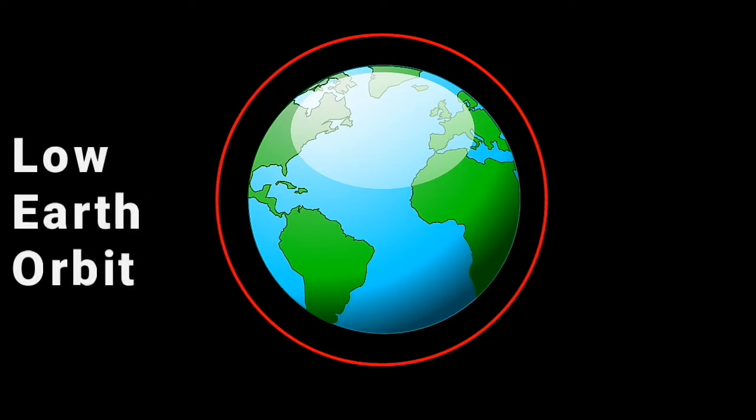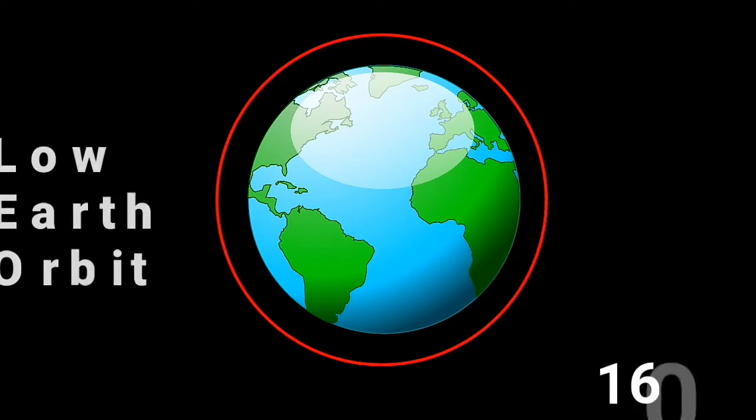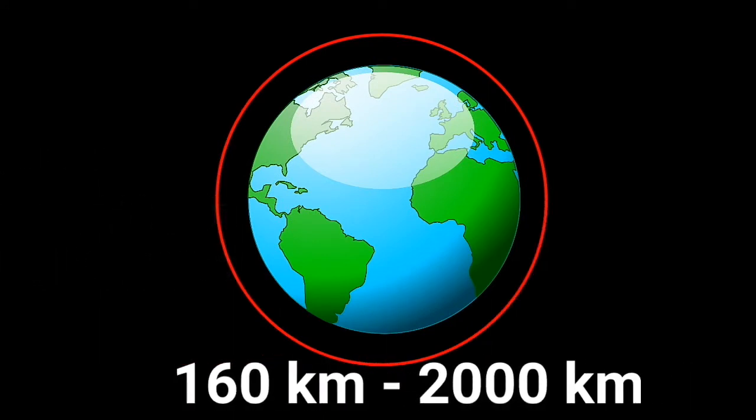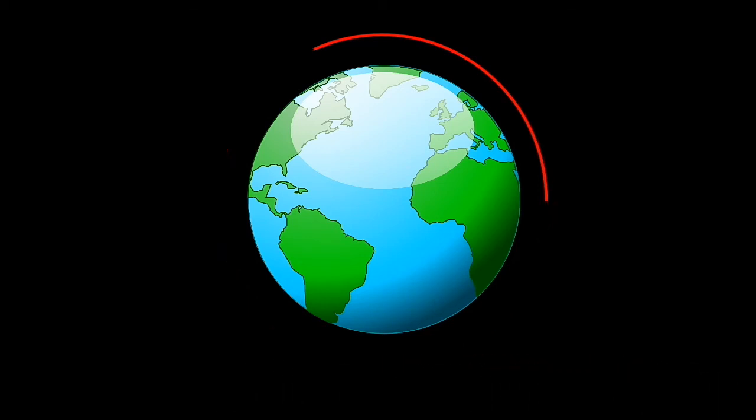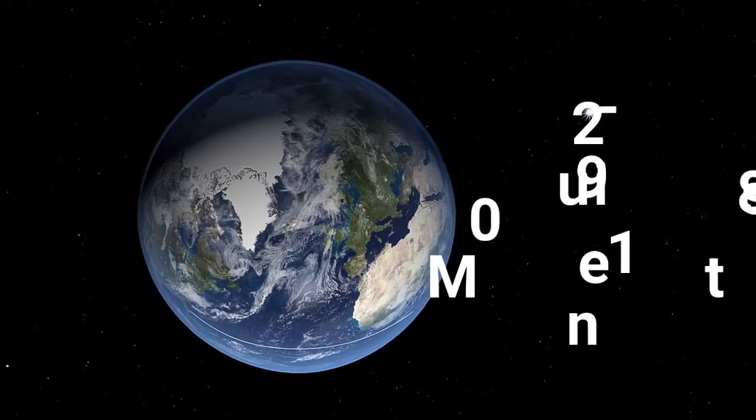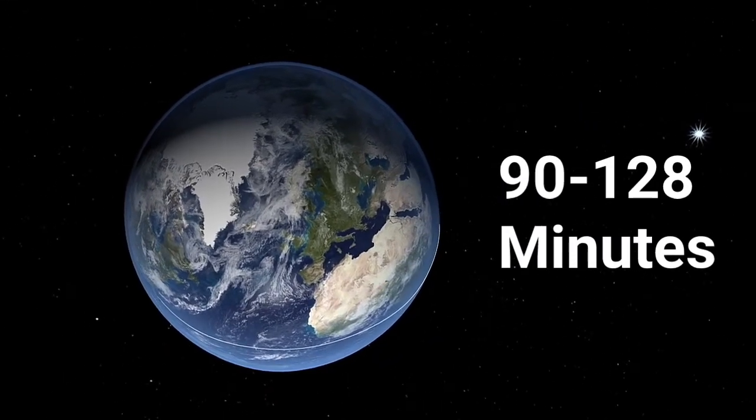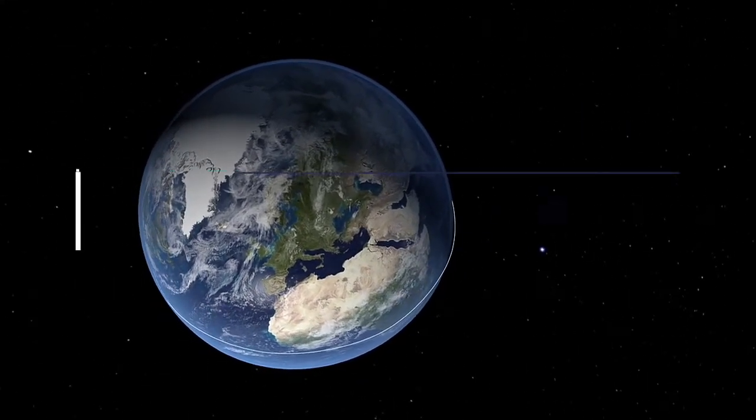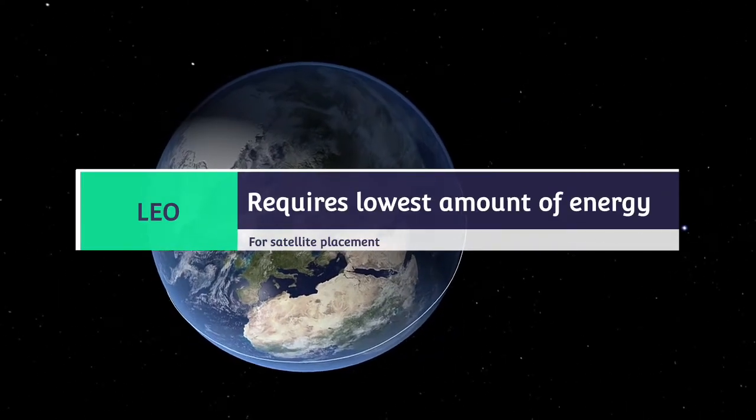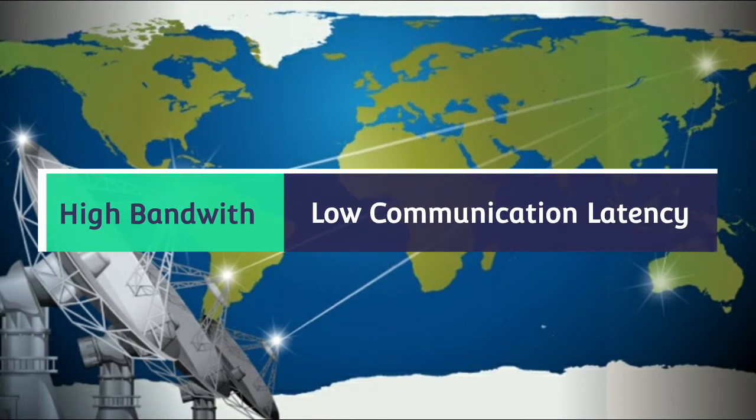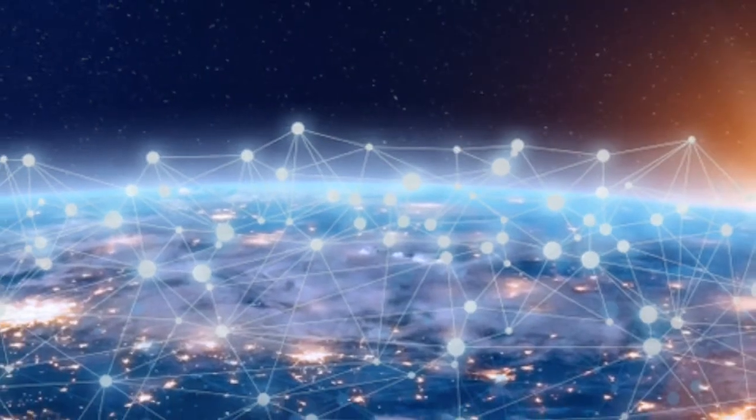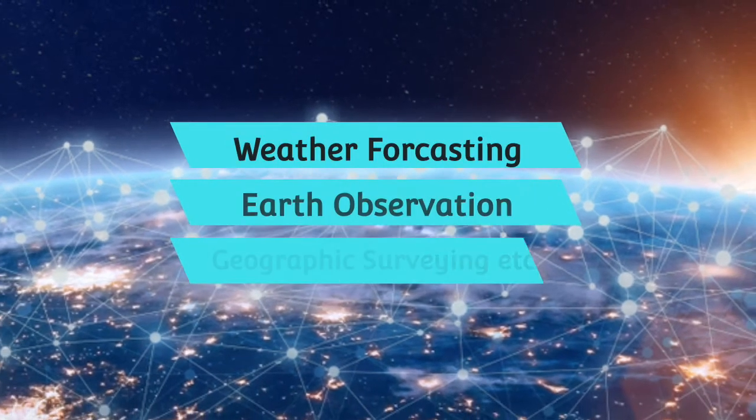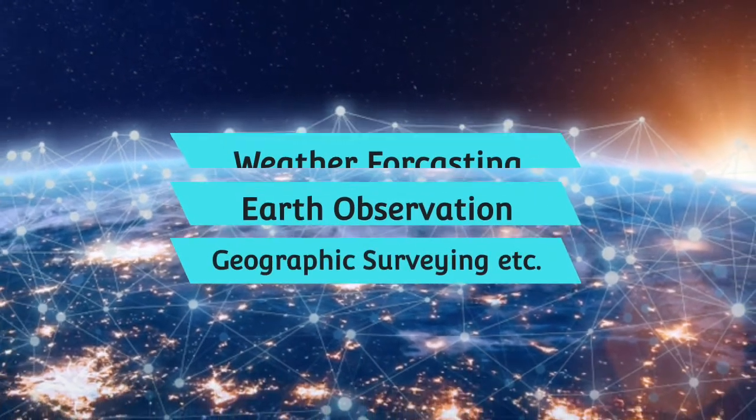Low Earth orbit satellites operate at a distance of about 160 km to 2,000 km above the Earth's surface. It takes approximately 90 to 128 minutes to circle the Earth. Low Earth orbit requires the lowest amount of energy for satellite placement. It provides high bandwidth and low communication latency. It is used for satellites of weather forecasting, earth observation, geographic surveying, etc.